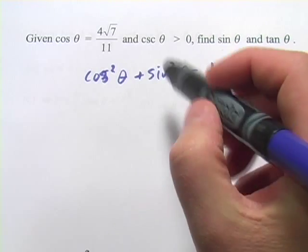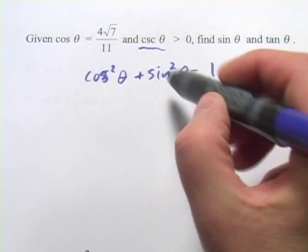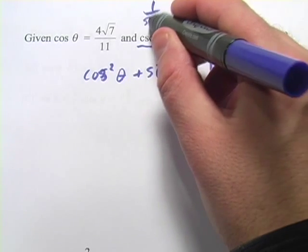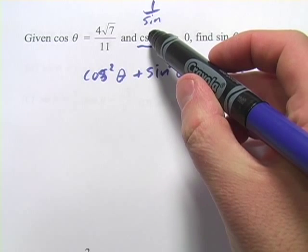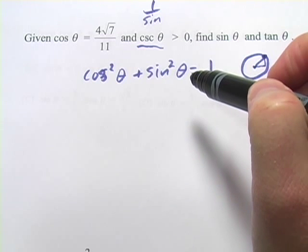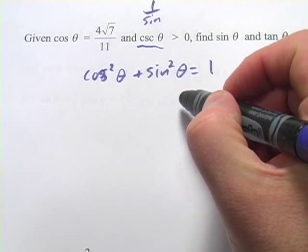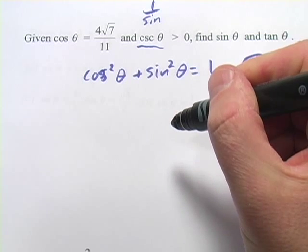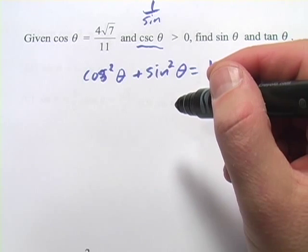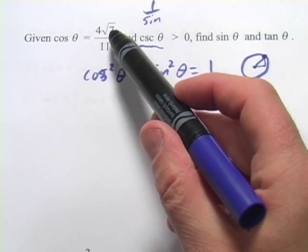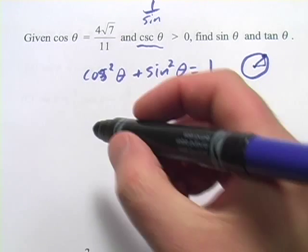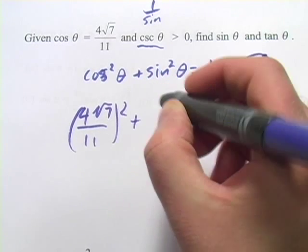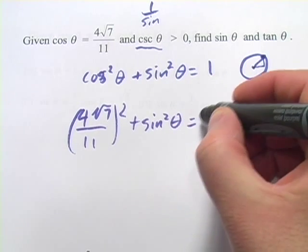Let's use this to figure this out. The other piece of information — the cosecant of theta is greater than 0 — well, the cosecant is 1 over the sine, and if it's positive, the sine is going to be positive too. So when we take a square root at some point in these calculations, we can ignore the negative value and just take the positive one. We're going to plug in the cosine value: 4 times the square root of 7 over 11, quantity squared, plus sine squared theta equals 1.